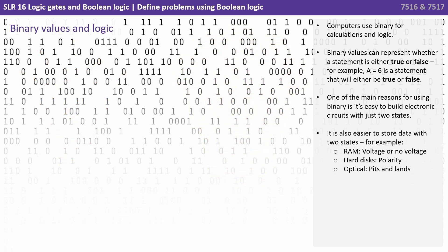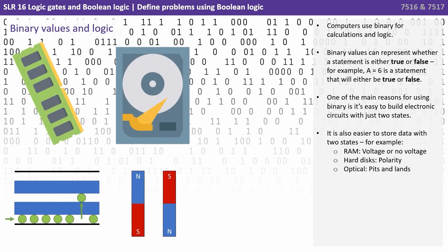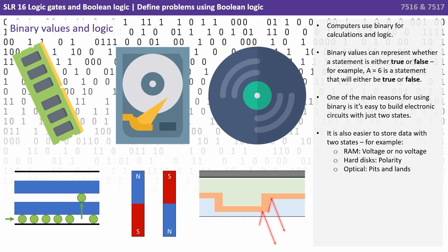One of the main reasons for using binary is it's easy to build electronic circuits with just two states. It is also easier to store data with two states. For example, RAM with voltage or no voltage, hard disks with polarity, and optical storage with pits and lands.